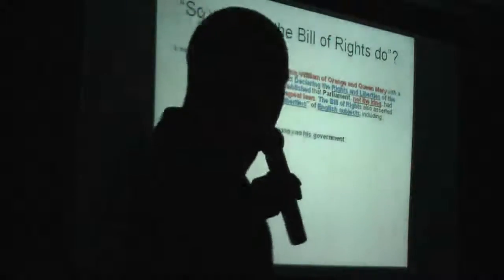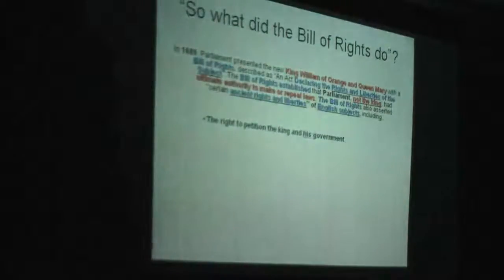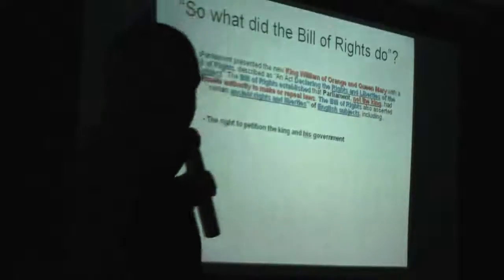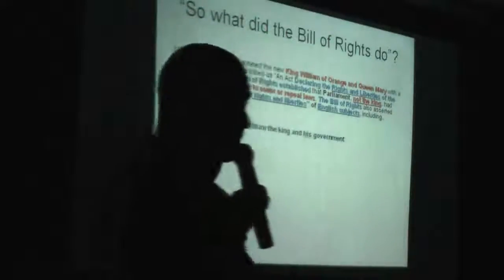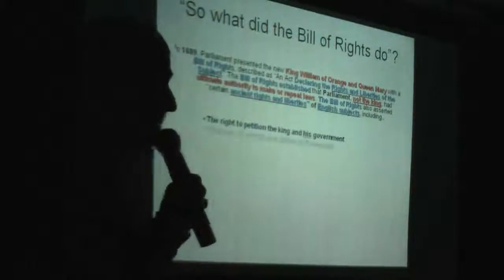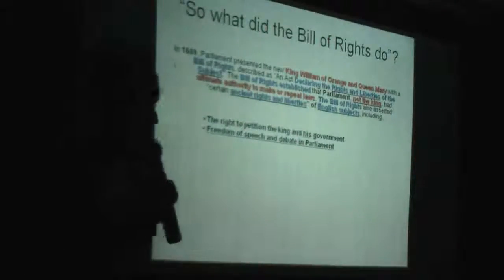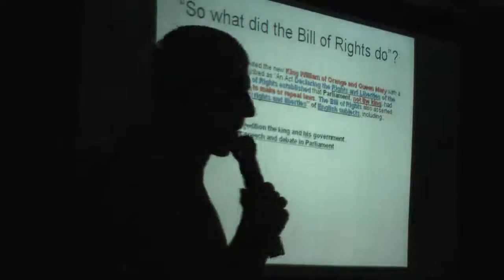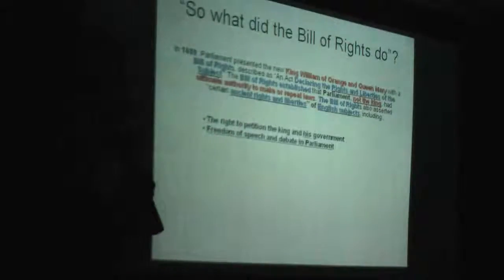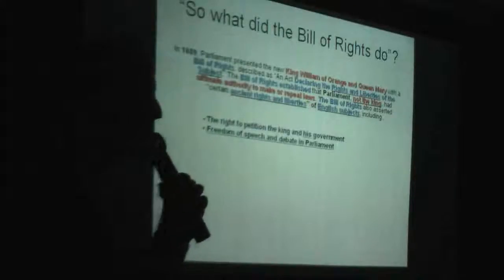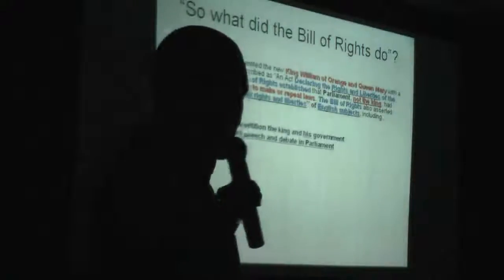First: the right to petition the King and his or her government — no, that way it's gone. You can't petition the King; you have to go through the Crown and you will meet lots of blockages where MPs will say 'yeah, we've got your letter, we're looking into it,' but nothing will happen. Second: freedom of speech and debate in Parliament — you don't have free speech; you have to get a licence, you have to apply to go to a free speech zone. So that's gone.